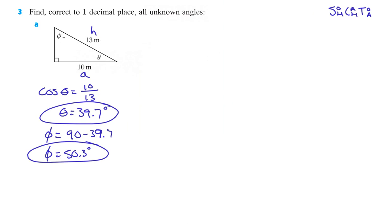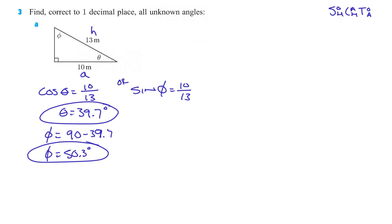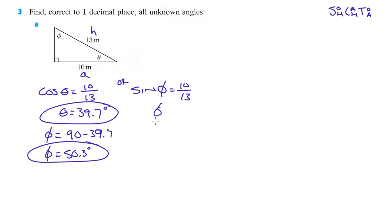Or, you could have used sine: from phi, that side is the opposite. So sine of phi equals 10 over 13, because sine is opposite over hypotenuse. Second sine of 10 divided by 13 gives 50.3 — the exact same number. So phi equals 50.3 degrees either way.